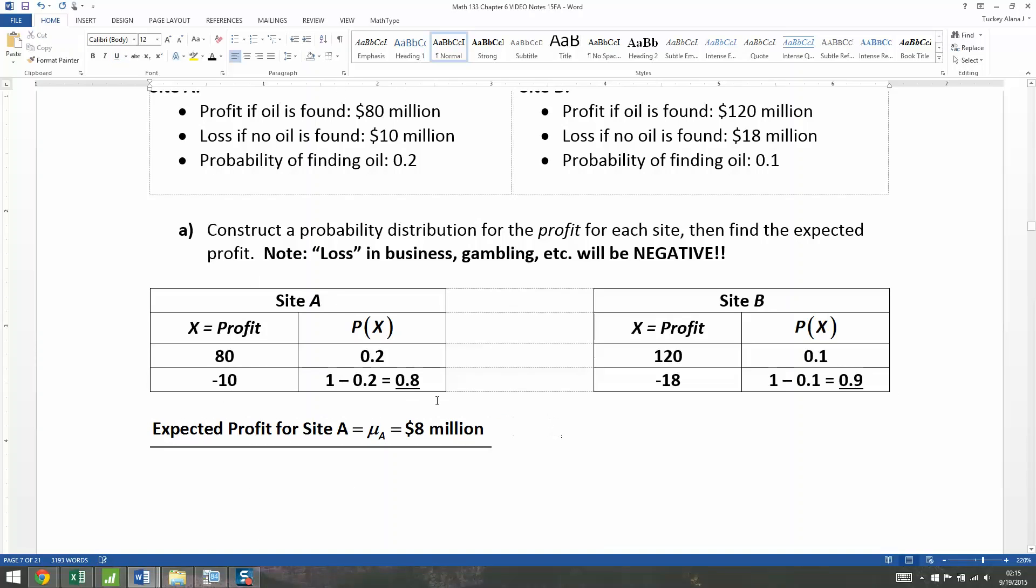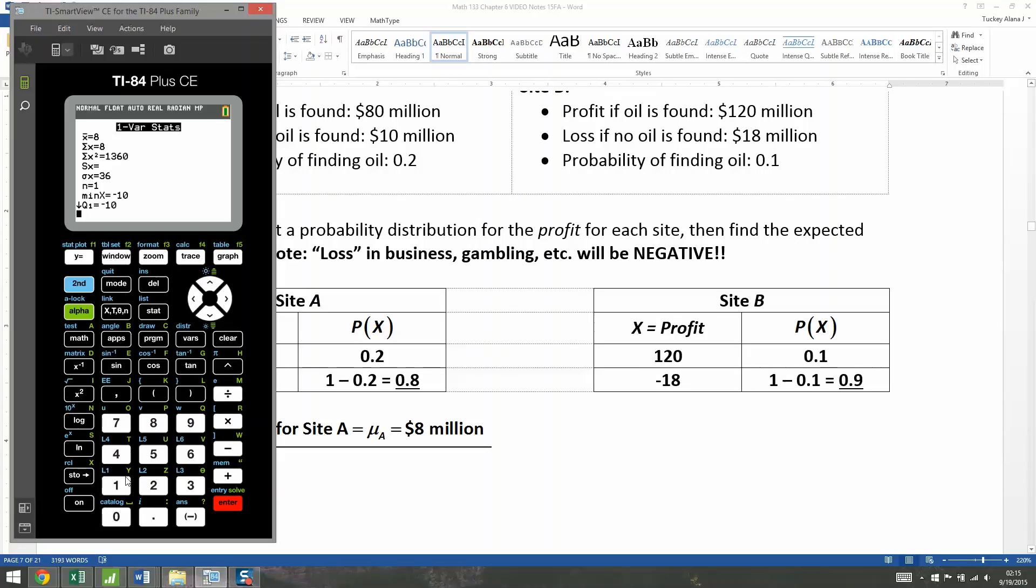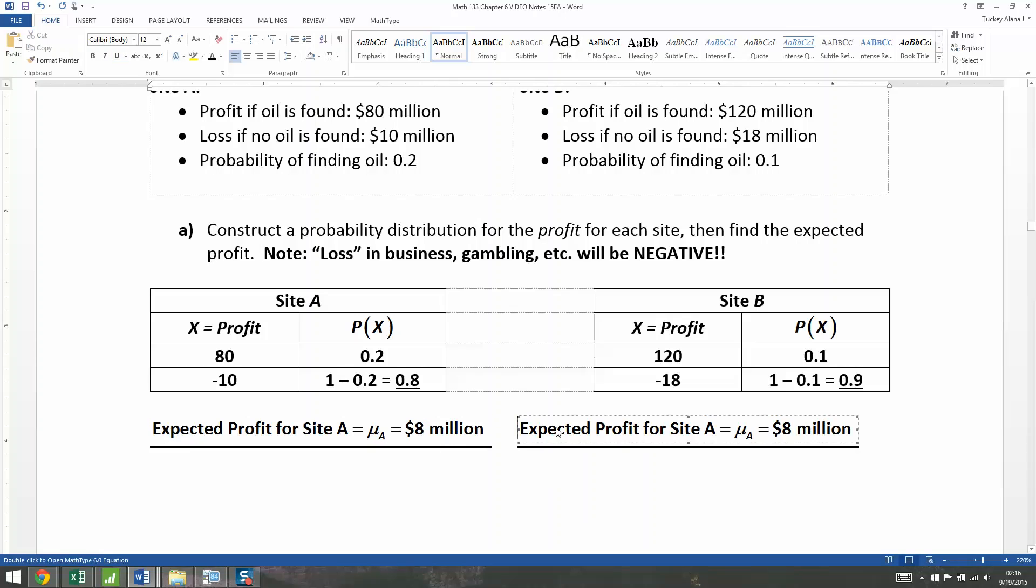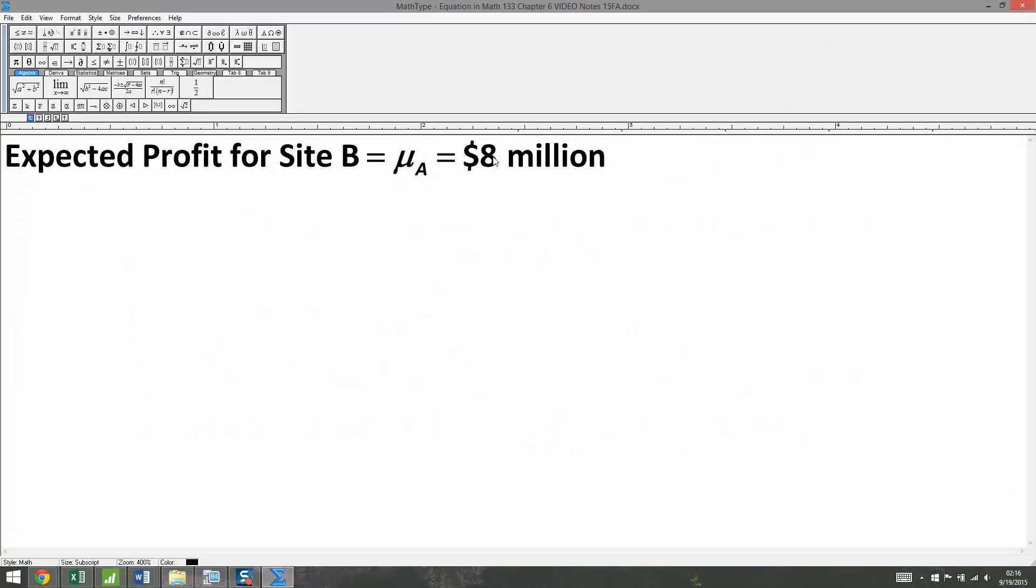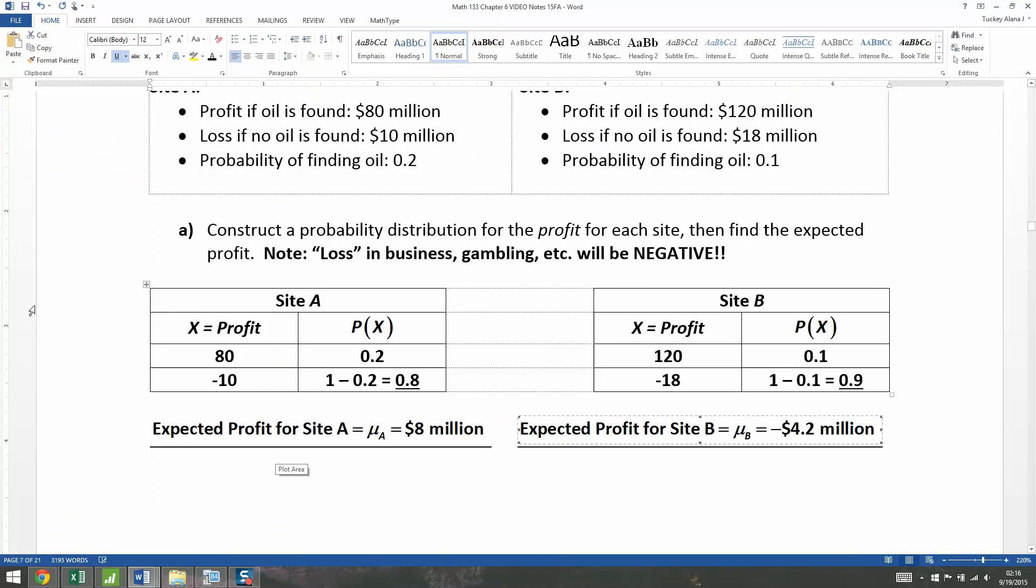Now, remember our unit here was million dollars. So when we find that eight, what it really is, is $8 million. So there's the expected profit for site A. Now site B, same idea, but different numbers. So 120 times 0.1, plus negative 18 times 0.9. And I get negative 4.2. So it's negative $4.2 million. That would be the mean for site B, which is negative 4.2. So $4 million, $200,000.